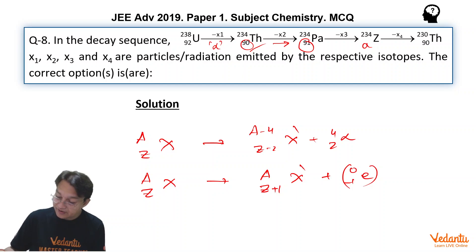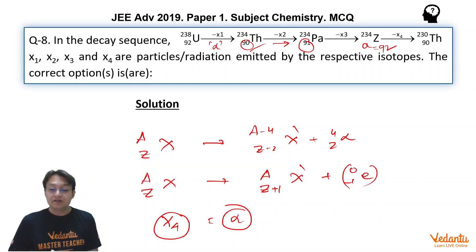That means X4 is definitely, X4 is definitely what? Alpha particle. And if X4 is alpha particle, then this A must be equal to what? A must be equal to 92. So we can identify that X1 has to be alpha particle, X2 has to be beta particle, X3 once again is a beta particle, and X4 is once again an alpha particle.